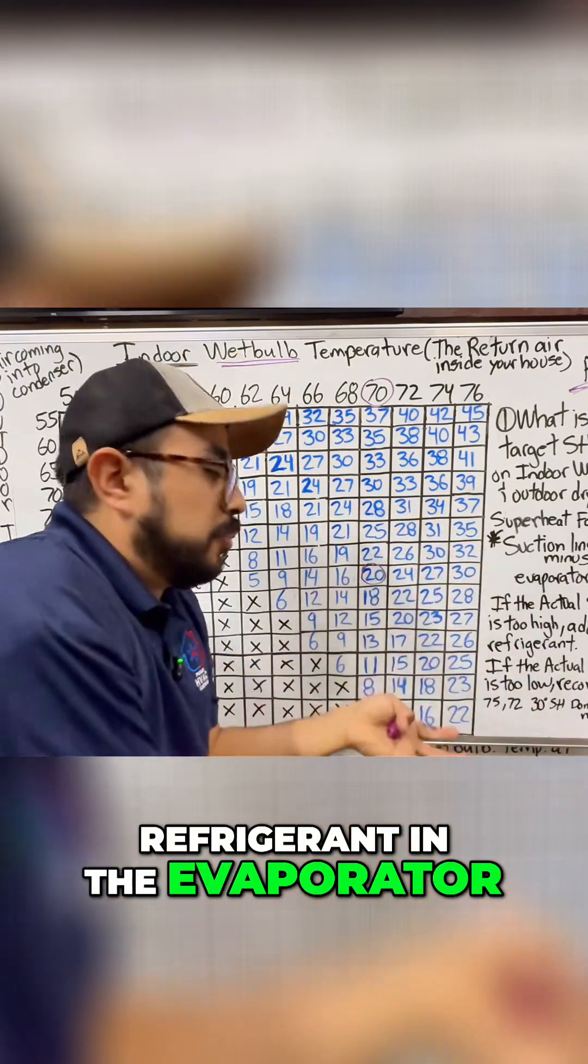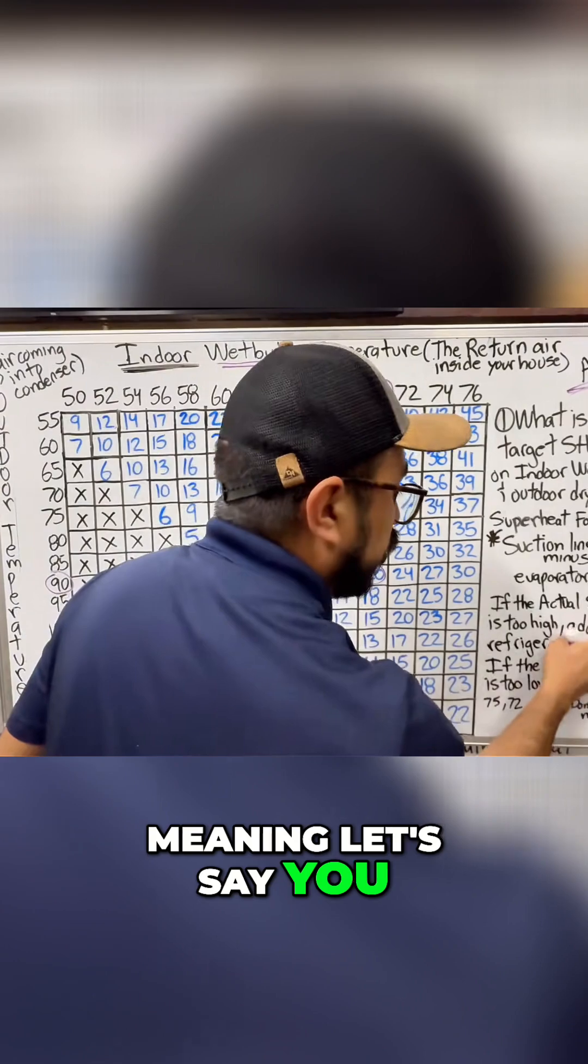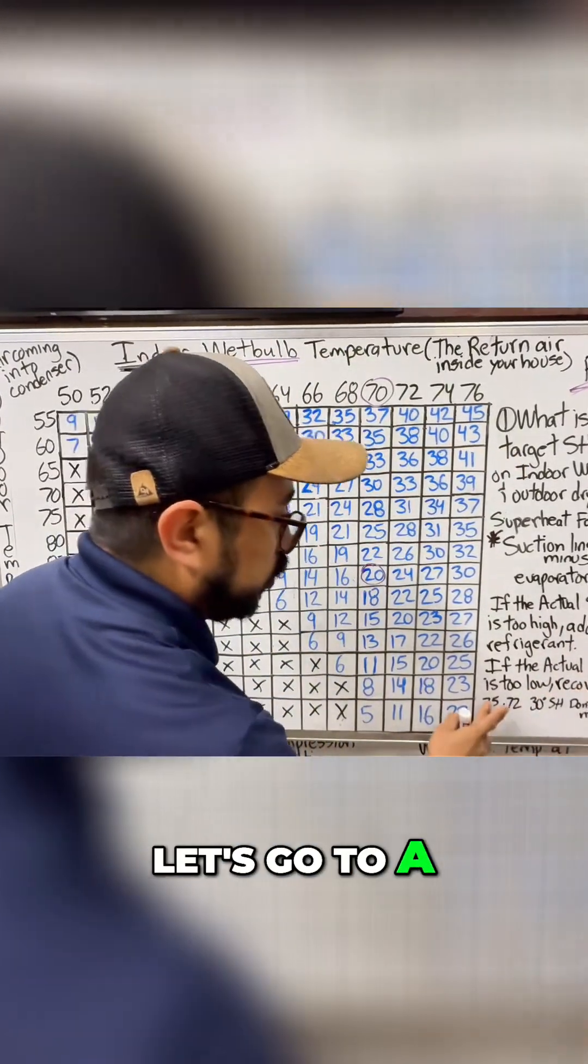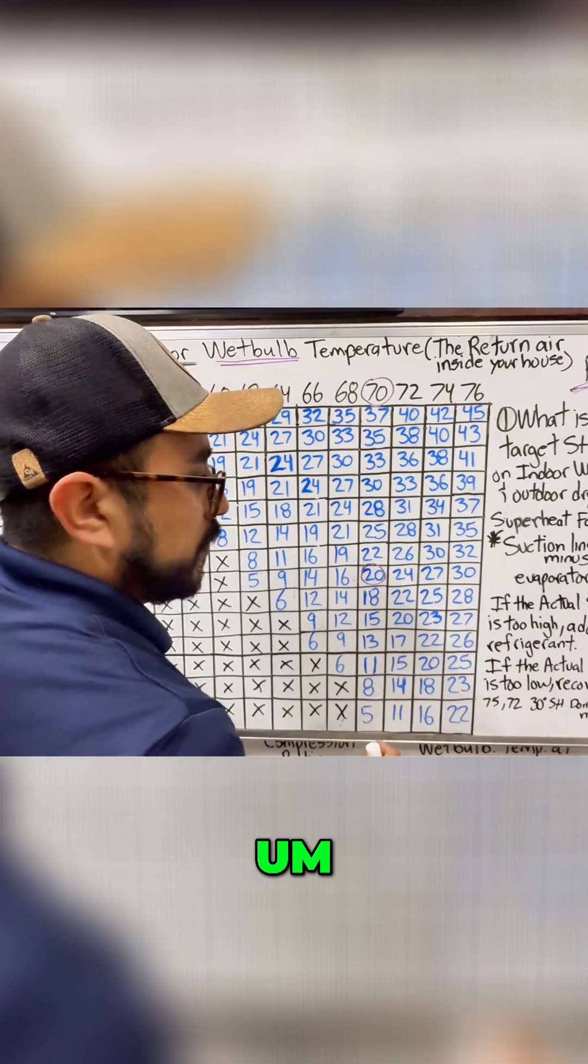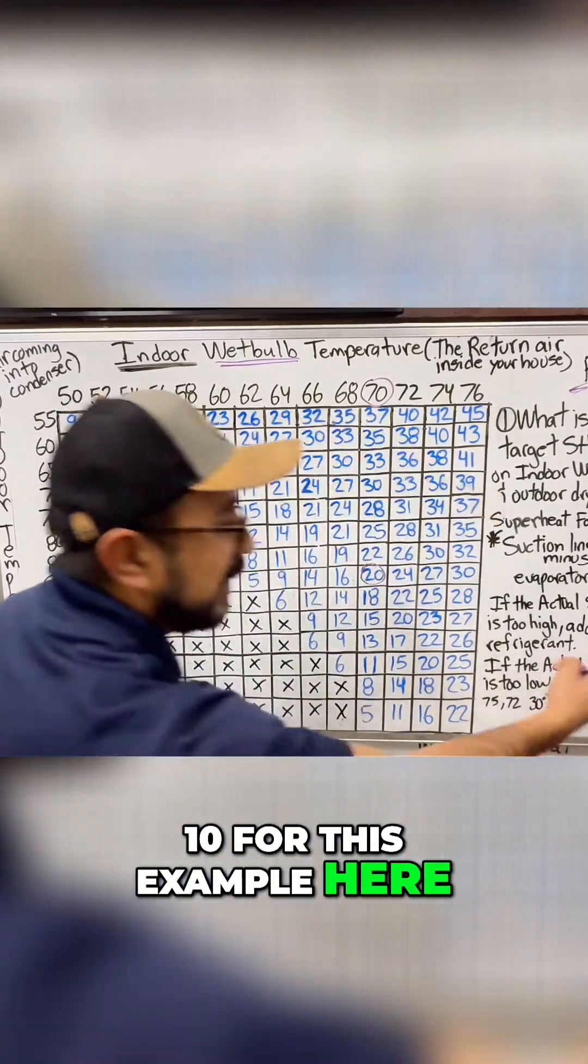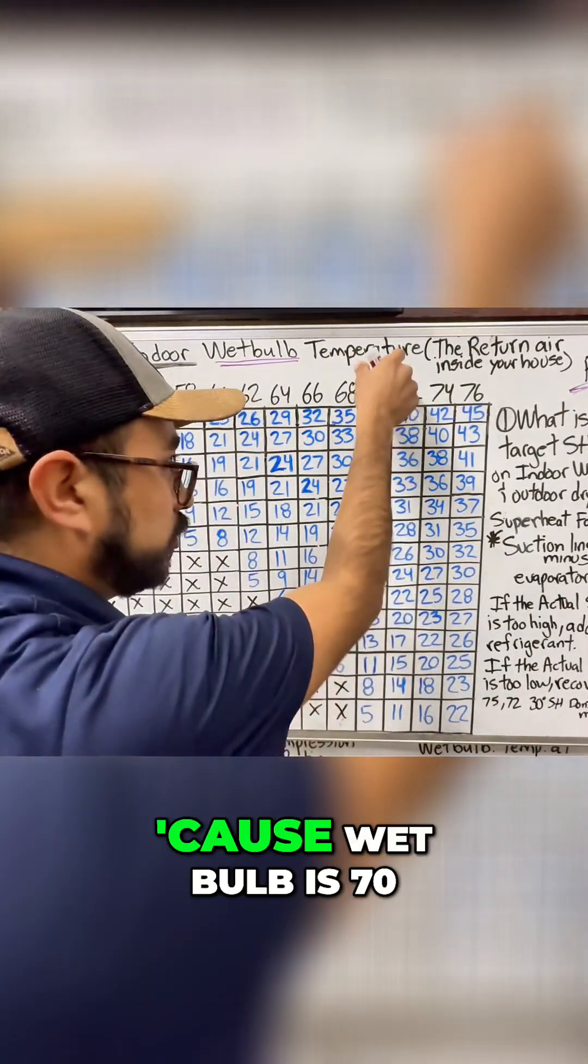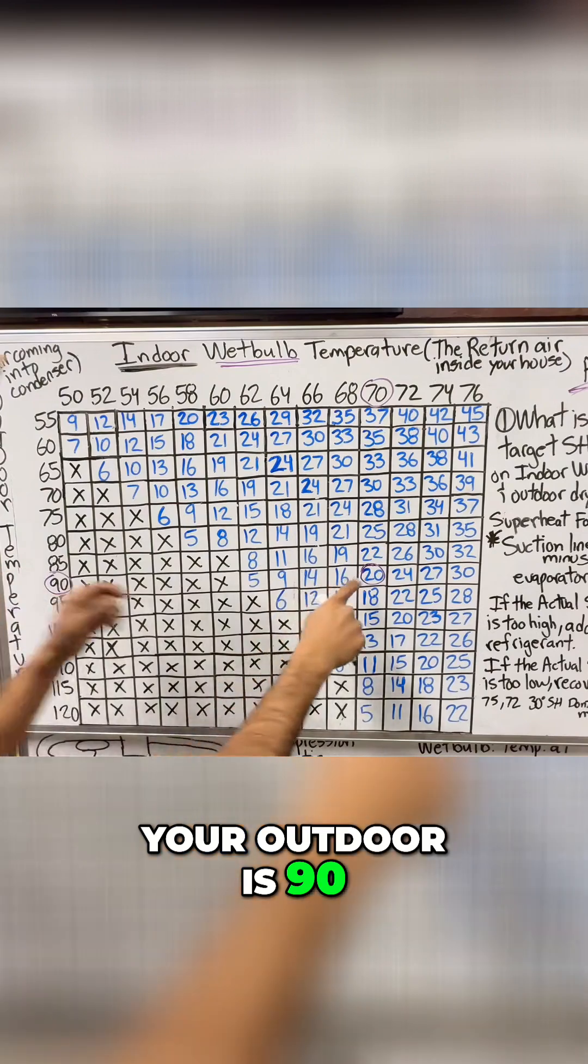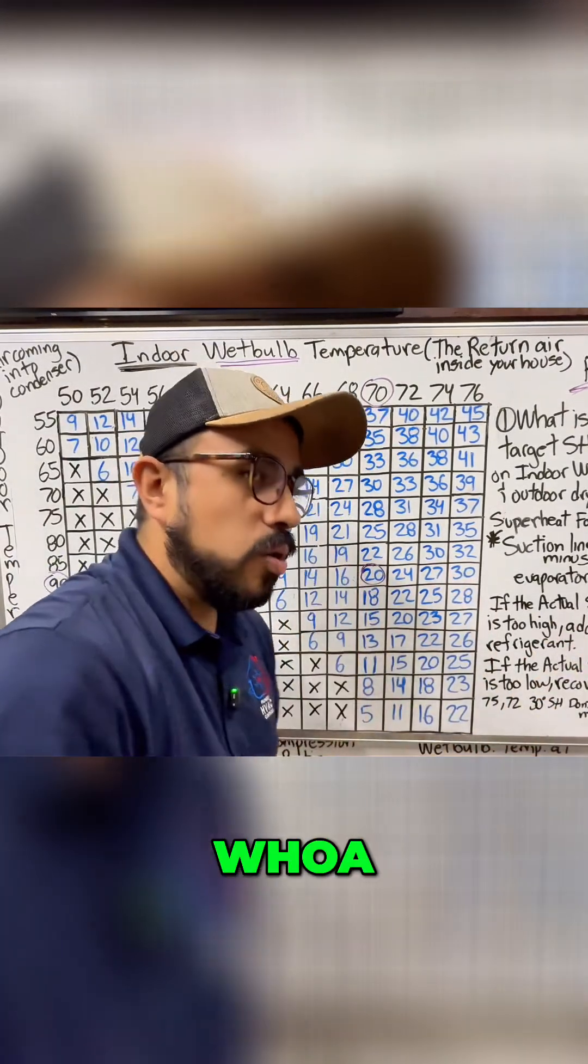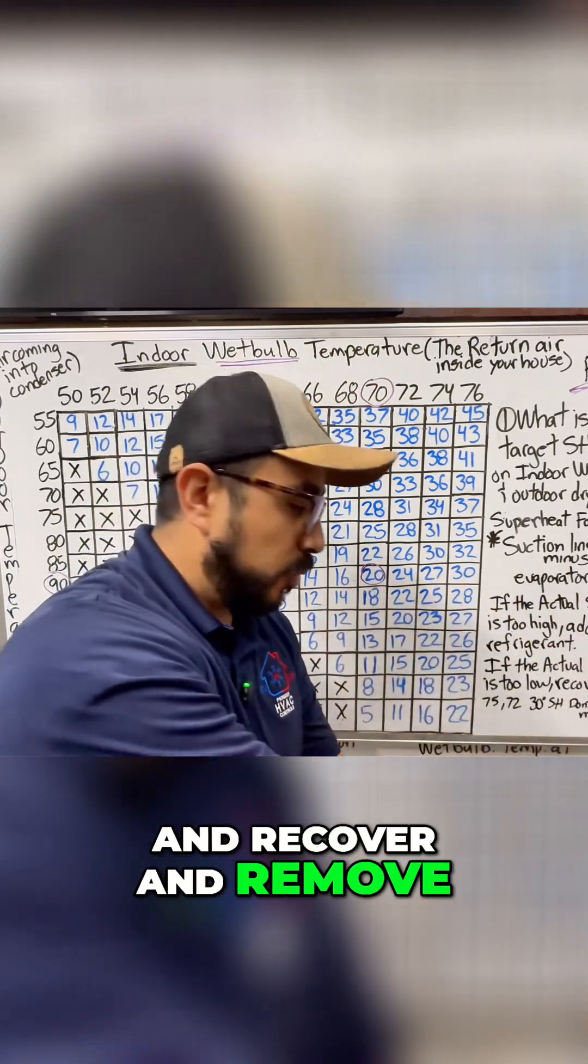Now if the actual superheat is too low, meaning let's say you go to a job and your actual superheat now is 10, but you're supposed to be at 20 because wet bulb is 70, your outdoor is 90, it should be at 20, but you're reading 10 degrees—whoa, it might be slightly overcharged. Let me go ahead and recover and remove some refrigerant to get it to 20.